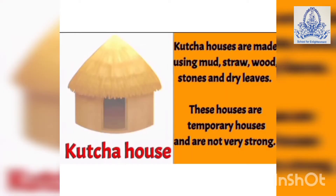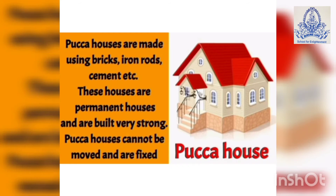Kaccha houses are made using mud, straw, wood, stones and dry leaves. These houses are temporary houses and are not very strong. Pakka houses are made using bricks, iron rods, cement etc. These houses are permanent houses and are built very strong.